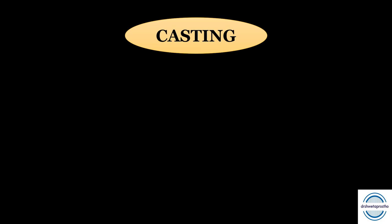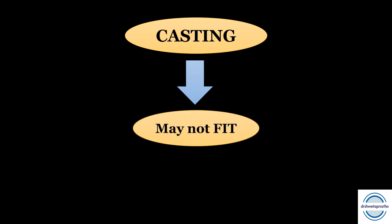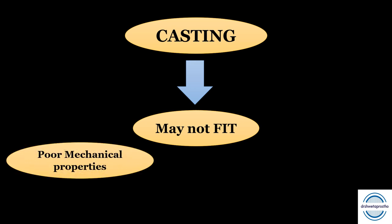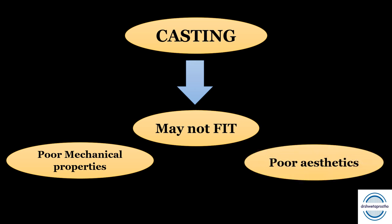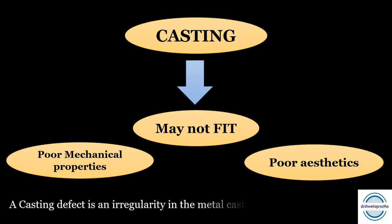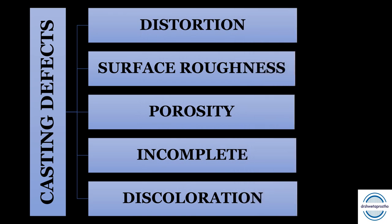Casting is a technique-sensitive procedure where a proper sequence of all steps is important. I have discussed the casting procedure in a separate video. If the proper procedure is not followed, the casting may have defects — it may not fit properly, may have poor mechanical properties, or poor aesthetics. A casting defect is any irregularity in the metal casting that is undesired. These defects can be classified as distortion, surface roughness, porosity, incomplete casting, or discoloration.